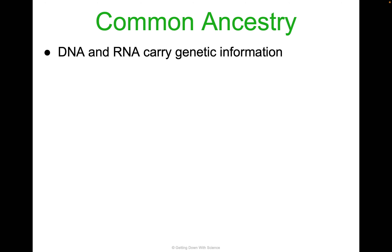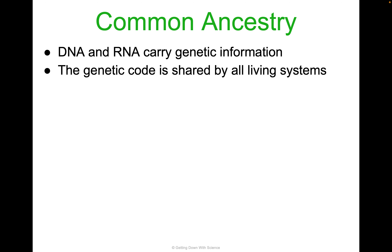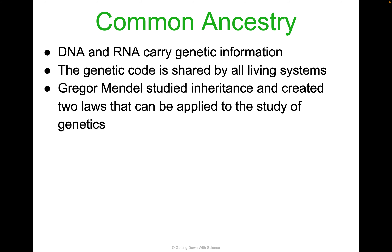Let's talk common ancestry to start. DNA and RNA carry genetic information — that's how traits are conserved and passed down. Genetic code is shared by everything that's alive: plants, animals, bacteria. It's all the nucleotides — adenine, thymine, cytosine, uracil, and guanine — shared between you, your cats, bacteria, dogs, and everything. This is what Gregor Mendel studied: the idea of inheritance. He created two laws that can be applied to the study of all genetics and genetic traits.